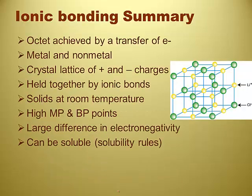Quick summary of ionic bonds: the octet is achieved by a transfer of electrons. They are made of metals and nonmetals in general. The crystal lattice is made of positive and negative charges held together by ionic bonds — electrostatic attraction. They tend to be solids at room temperature with high melting and boiling points — table salt is a good example. A large difference in electronegativity, and they can be soluble, though sometimes not — remember the solubility rules.